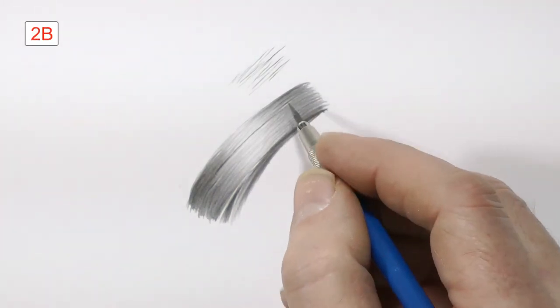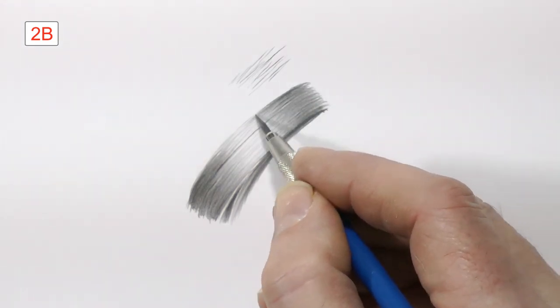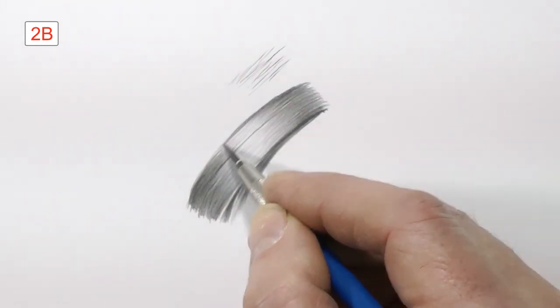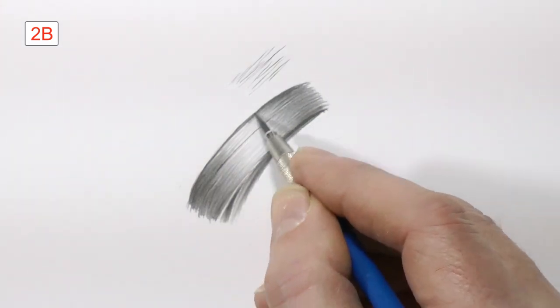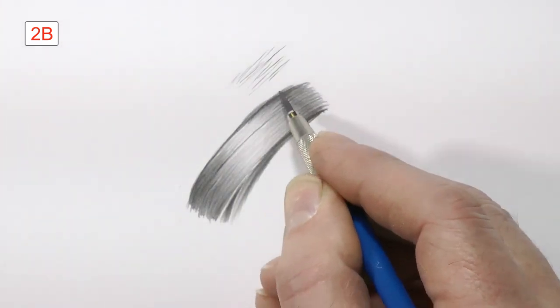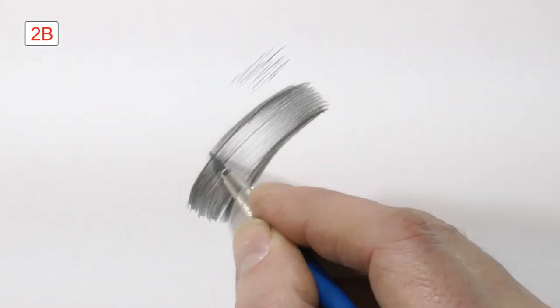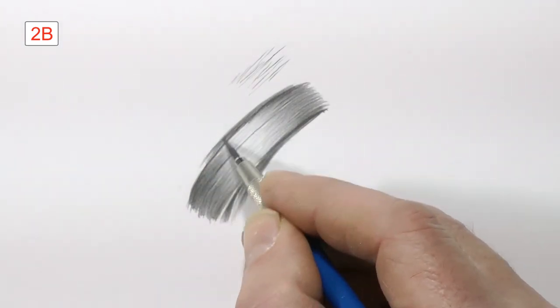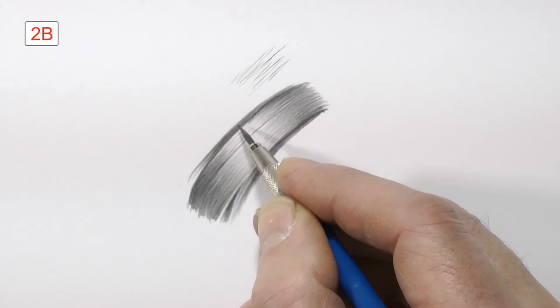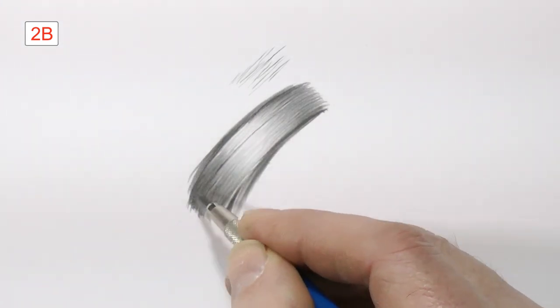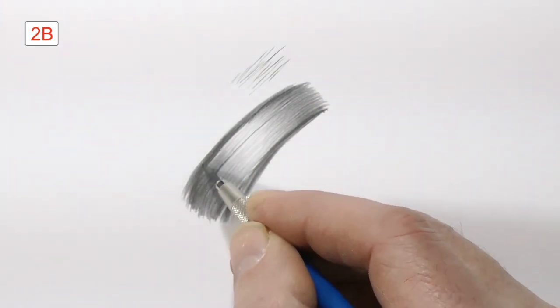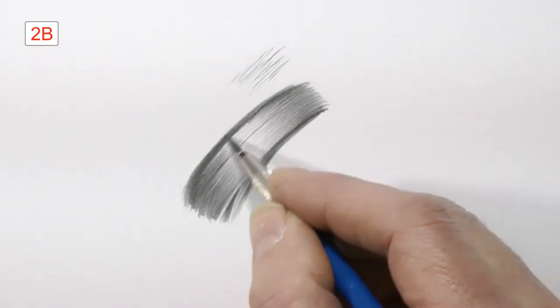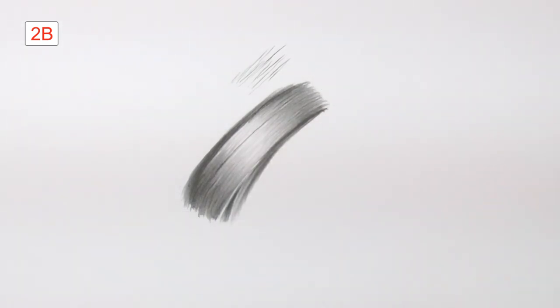That was an HB. Let's try a 2B on this side. So, if you taper every line, you can draw in sections. It doesn't have to be drawn from one end to the other, as long as you taper the ends of your lines.